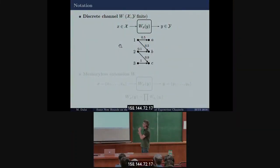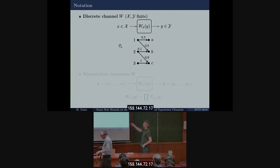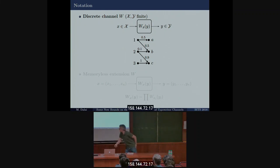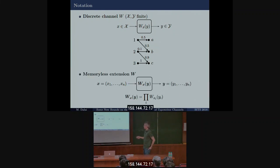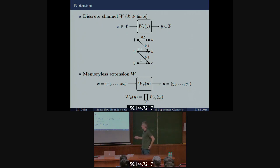Just to give you some notation: I will call X the input to the channel, Y the output, and W is the channel itself — those are the conditional probabilities of observing Y given X at the input. We will consider memoryless extensions, using bold font for vectors. Memoryless means the probability of the output sequence is the product of probabilities of the single symbols being observed.